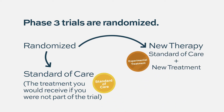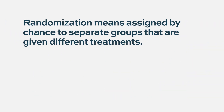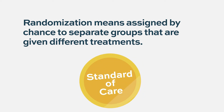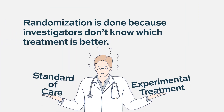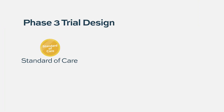Typically in myeloma, the standard approach of therapy is compared to the standard therapy plus an additional agent. These are randomized trials where there's essentially a coin flip determining which arm of treatment the individual patient receives — the standard treatment or the new treatment. We do the randomization because we don't yet know that the newer therapy is truly more efficacious or more efficacious and safe.